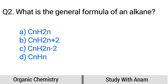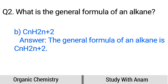Question number 2. What is the general formula of an alkane? Option A: CnH2n, B: CnH2n+2, C: CnH2n-2, D: CnHn. The correct option is option B, CnH2n+2. The general formula of an alkane is CnH2n+2.